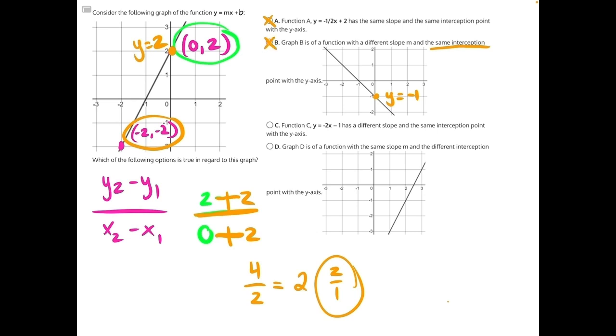For answer choice C, they're giving us a function and saying it has a different slope, but again, the same interception point. When here, the interception point is listed to be negative one, not positive two. So again, C is incorrect. And by process of elimination, answer choice D is our correct answer.